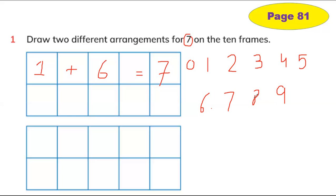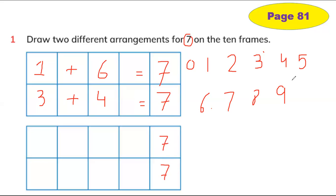Now let's take another example. I'm going to take three, then choose another number that can make seven — I'm going to use four. So three plus four equals seven. You have to make more combinations — choose any two numbers from zero to nine to make seven. I hope you understand.